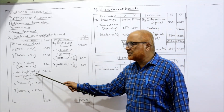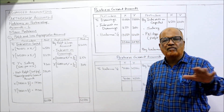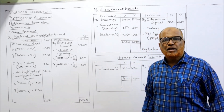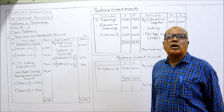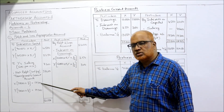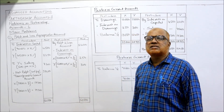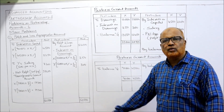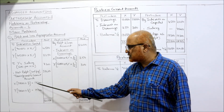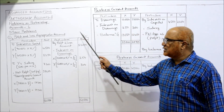This 38,600 is the net divisible profit. It is divided between the partners in the profit sharing ratio, which here is equal — 50:50. Half of 38,600 is 19,300. So half of the profit goes to X and half goes to Y, meaning each partner gets 19,300. That completes the profit and loss appropriation account.